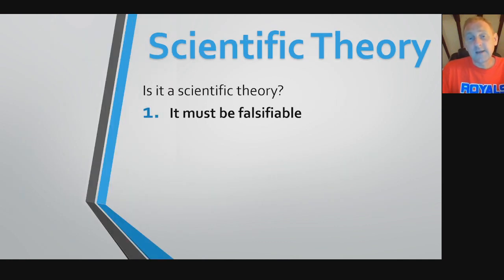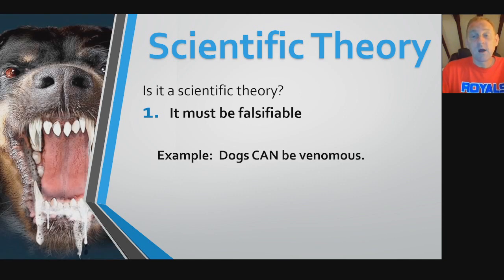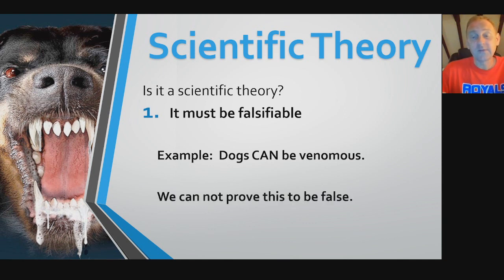To be a scientific theory, there has to be three things that have to be true. The first thing is it must be falsifiable. An example, dogs can be venomous. If someone theorizes dogs can be venomous, even though maybe we've never seen a venomous dog, we cannot falsify that statement because maybe there's just a dog that's venomous that we haven't met yet. We cannot prove this to be false. We can't prove that there isn't a dog that is venomous. And therefore, this is not a scientific theory.